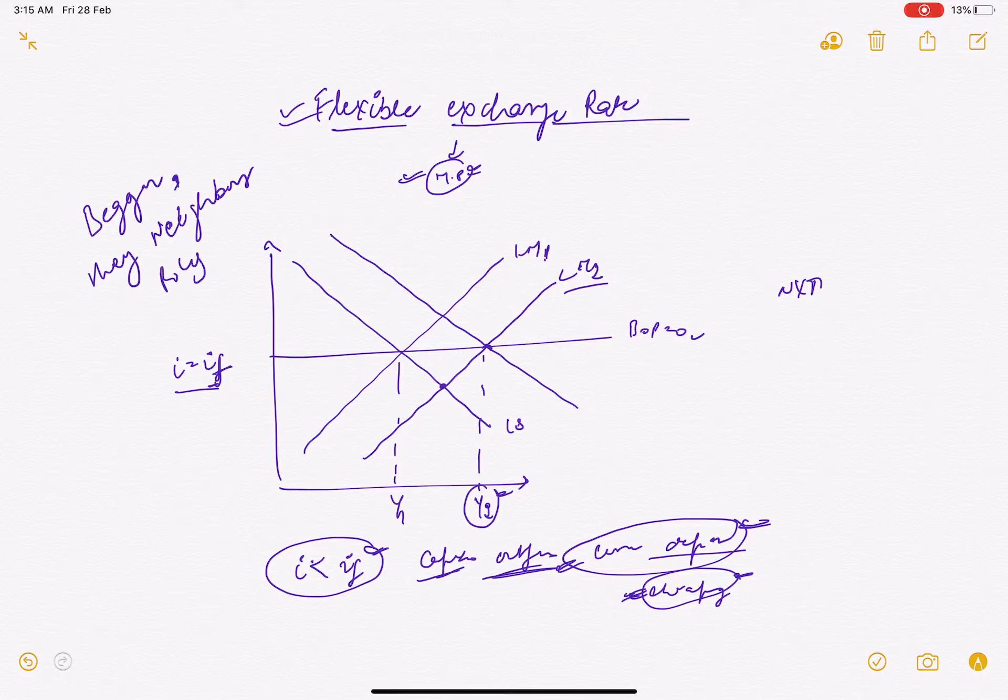Before we begin, I've already explained the concept of flexible exchange rate and monetary policy. Since they are interconnected, I want to erase the entire diagram and start fresh. We learned that under monetary policy with flexible exchange rate, the LM curve shifts rightward, which affects the interest rate. Let me draw it again so you get the entire concept.